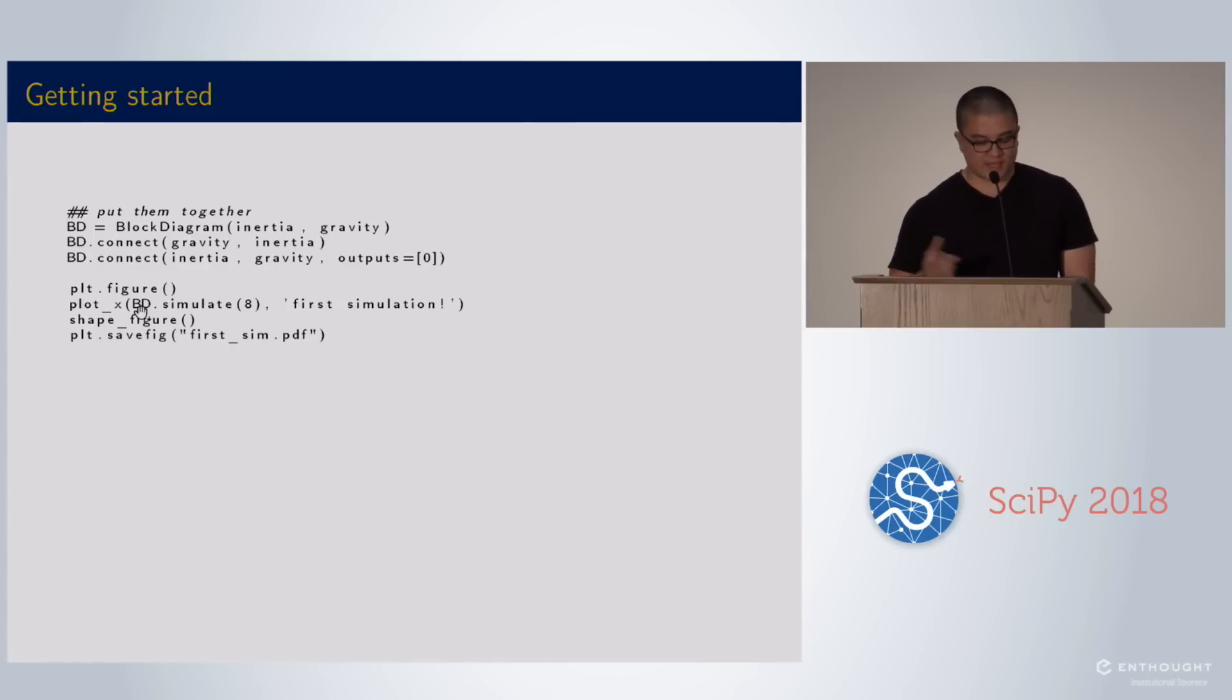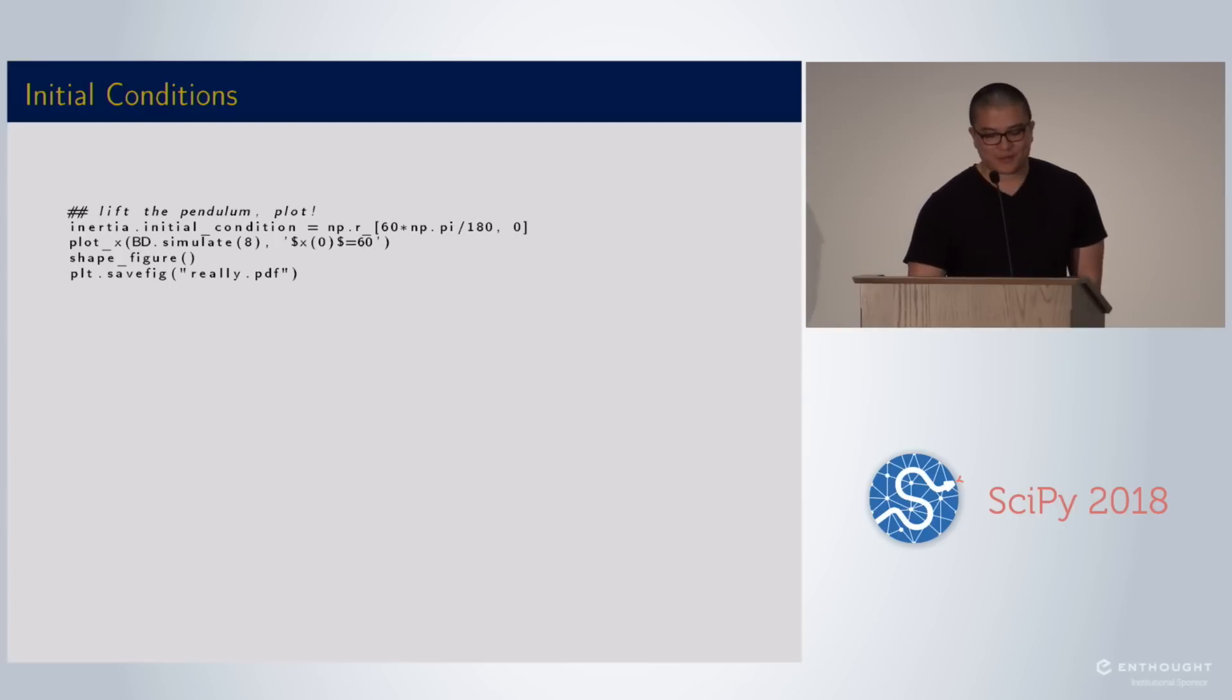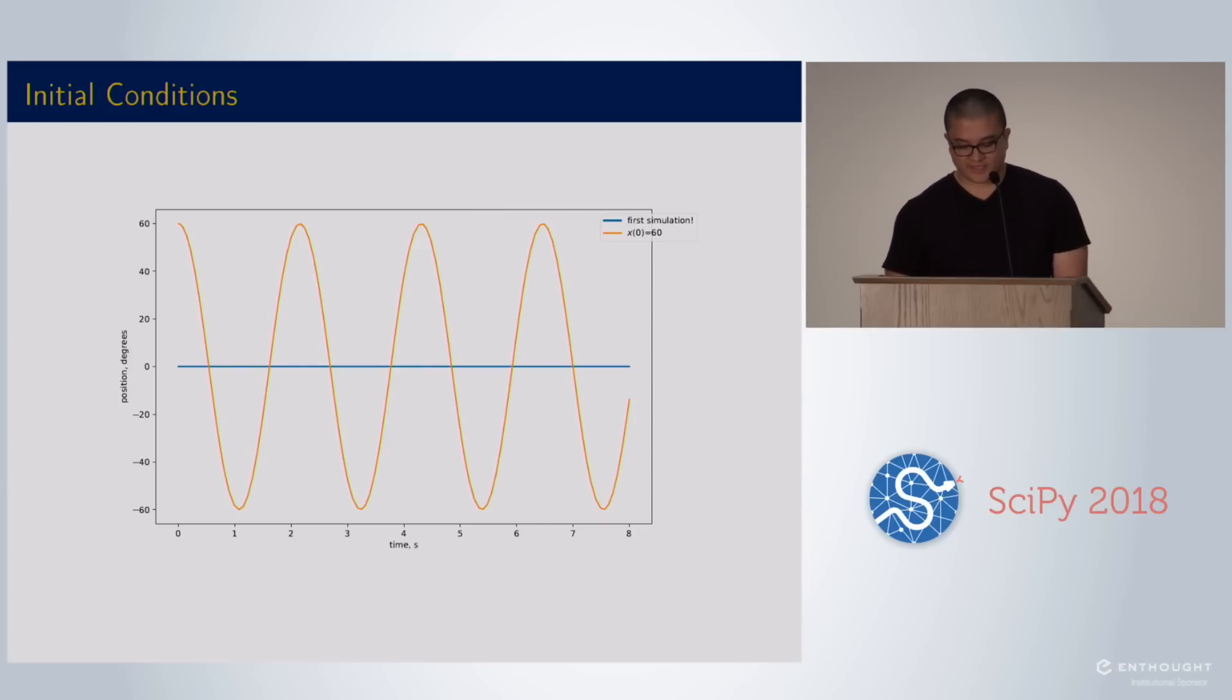I am passing that straight into my plotting function and I get something that doesn't look so great. But then I remember if I have a pendulum hanging there, it will still just hang there. So that's okay. Instead we can change the initial conditions. If we set it to 60 degrees and then re-simulate it, I can change that by setting the parameter to the initial condition and passing in a numeric array for the two states. Then I get the oscillations that I would like to see.